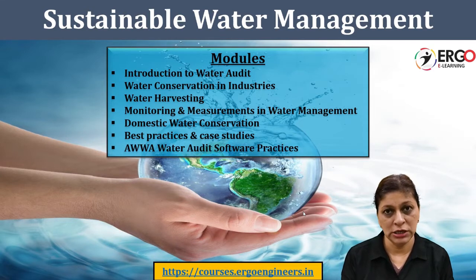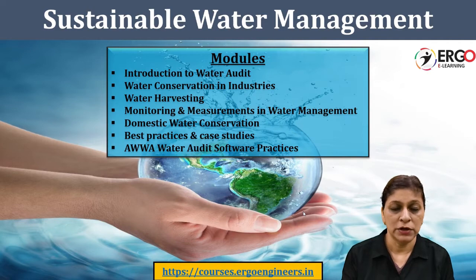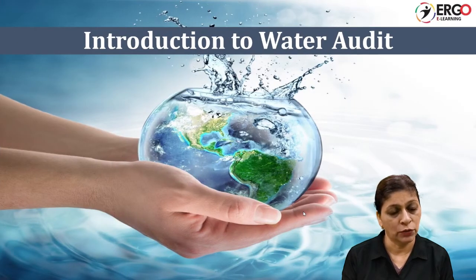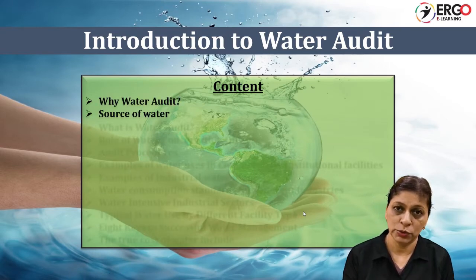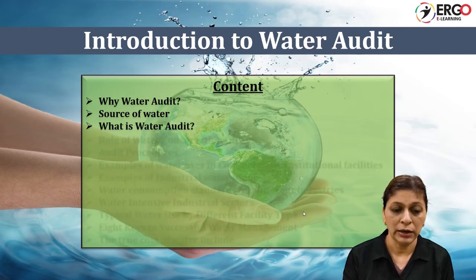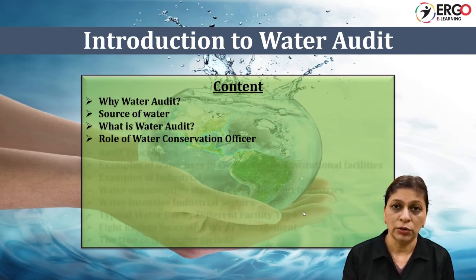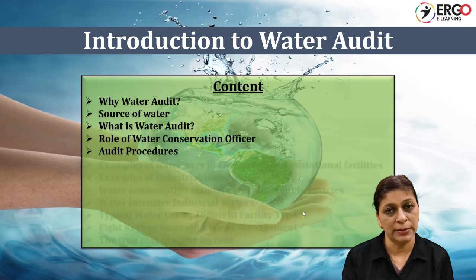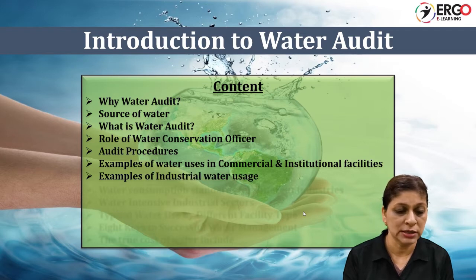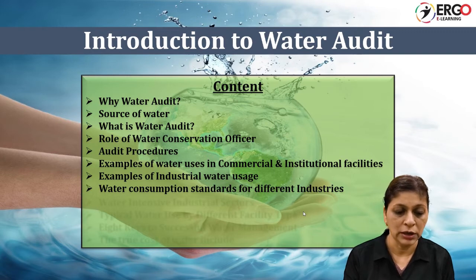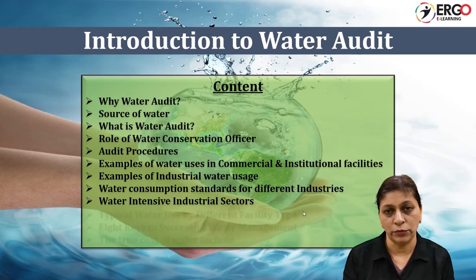Looking in detail at these modules: the first module talks about water audit. It starts with what is water audit and why one should go for a water audit. It explains different sources of water available in the ground and the role of a water conservation auditor. Then it talks about the water audit procedure, details, and methodology for different types of applications and different types of end users. There is also detail given about the main features of water audit and some key ideas for performing it.